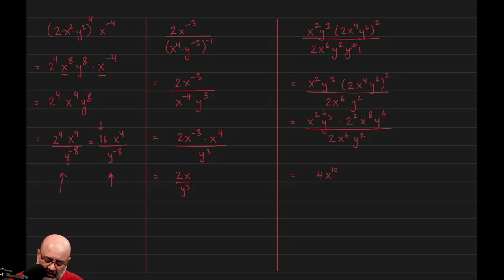Then we have this y to the 3rd and this y to the 4th. Multiplying those two gives us y to the 7th by the product property. And the denominator stays as 2x to the 6, y squared.